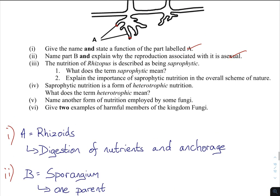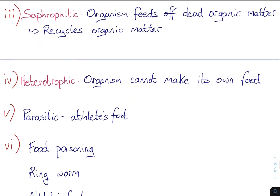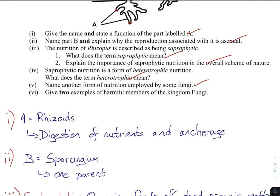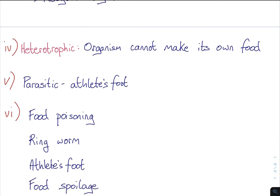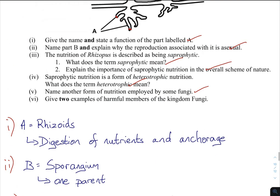What does saprophytic mean? It is an organism that feeds off dead organic matter. Why is this important? It's important to recycle nutrients in nature. What does heterotrophic mean? It means it cannot make its own food. Name another form of nutrition employed by some fungi — under heterotrophic there are two types: saprophytic and parasitic. Parasites feed off living organic matter; saprophytes feed off dead organic matter. Examples: athlete's foot is a parasite. Give two examples of harmful members: food poisoning, food spoilage, ringworm, athlete's foot.